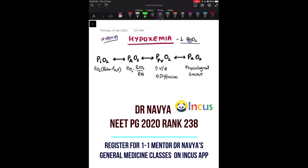Hi everyone, I'm Dr. Navya and now I'm going to discuss with you about hypoxemia. So let us start with its definition. Hypoxemia is a reduction in partial pressure of the arterial oxygen content. This small 'a' here represents the arterial oxygen.